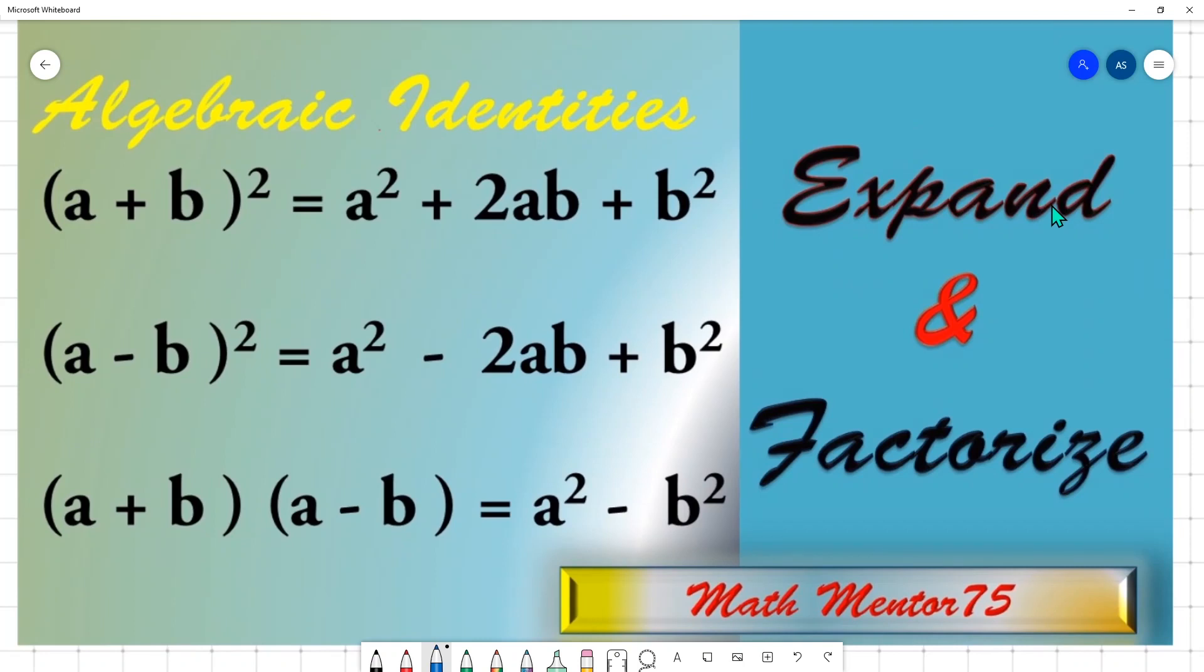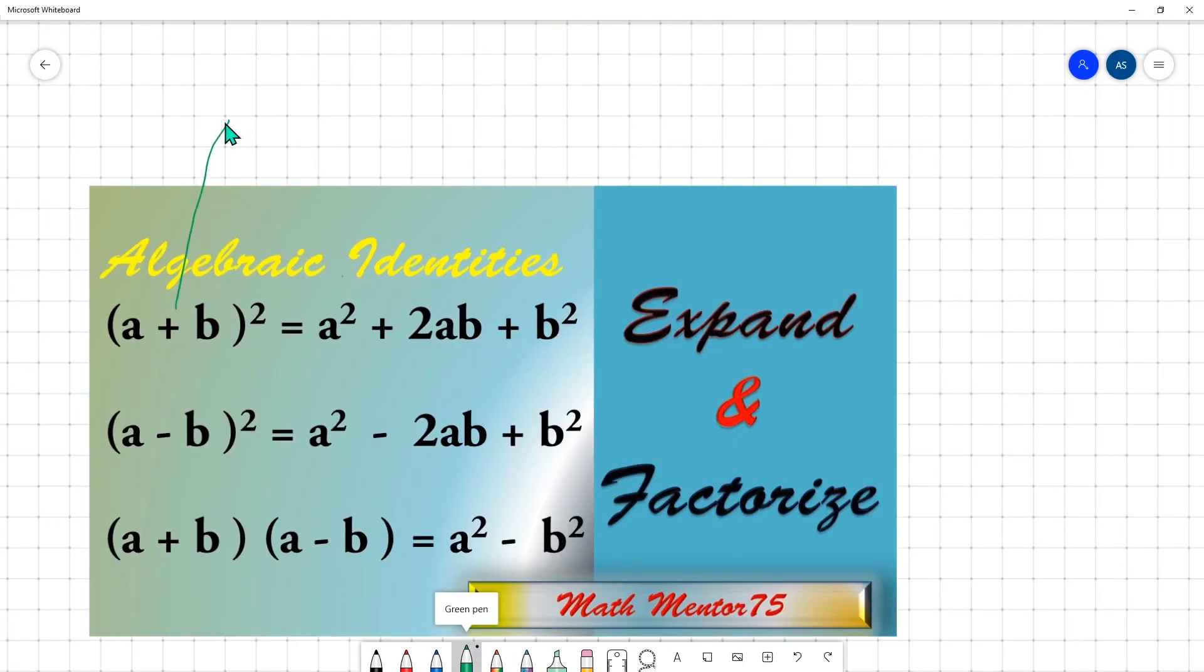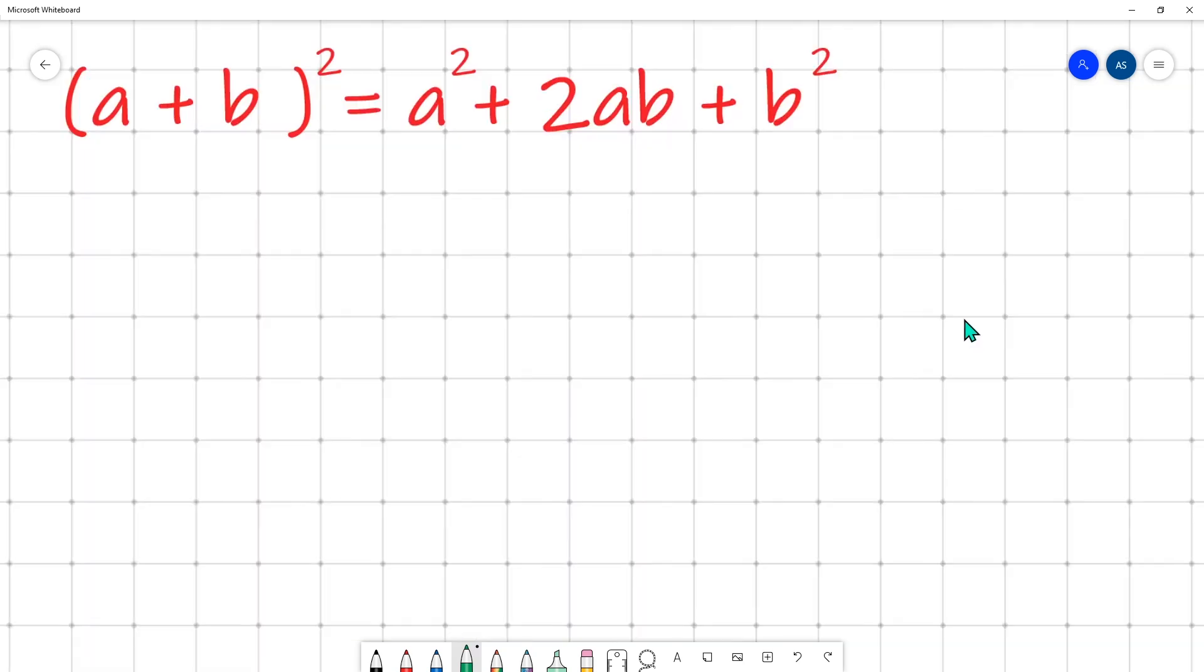Our today's topic is algebraic identities. The left hand side represents factors and on the right hand side, this is the expanded form. These equations are known as identities. Now let's discuss these identities one by one.